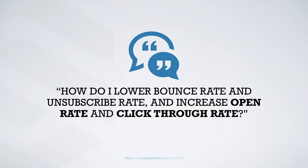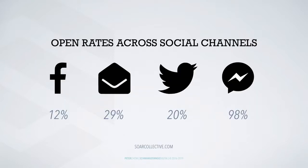Let's take a look across the social channels. Facebook has a 12% open rate, email 29%, Twitter 20%, Messenger has 98%. Now if you understand how powerful this information is — if you've always been on email and receiving that standard average of 29%, I don't even get 29% nowadays. If you are able to get 29%, wonderful.